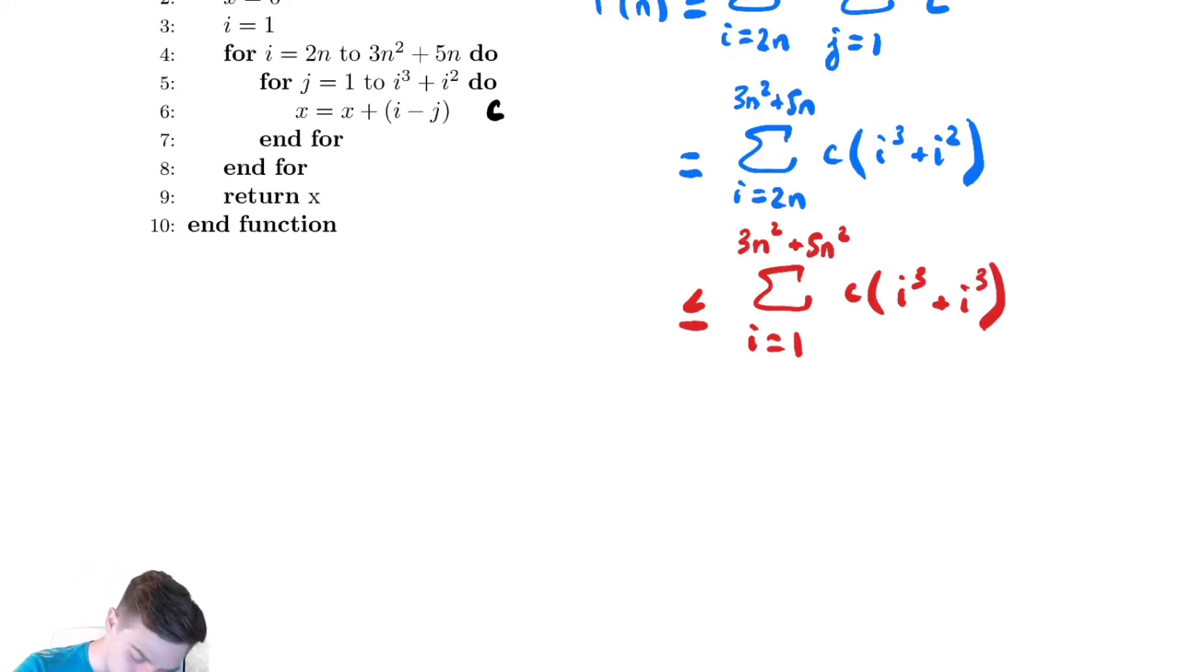Now, let's combine the stuff we've created. So, we now have the sum from i equals 1 to 8n squared of 2ci cubed. Now, we've really kind of helped ourselves out. So, you could again resort to formulas here if you wanted, but we've already given up hope on an exact answer because we've started bounding.